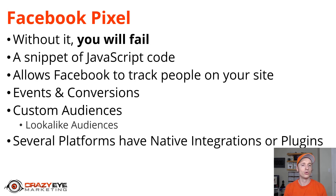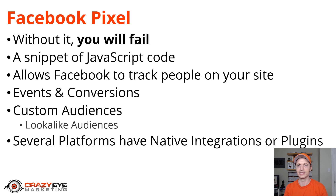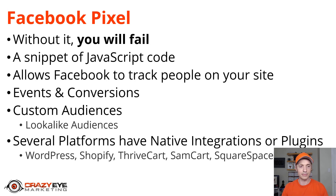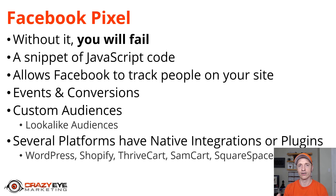Several platforms have native integrations or plugins with the Facebook Pixel. In this video I'm going to show you how to install it without a native integration, but if you have one of these platforms, do a quick Google search to see if you can natively install your Pixel, because that's likely a better option — it will automatically track events for you. For example, platforms like WordPress, Shopify, ThriveCart, SamCart, or Squarespace will automatically track opt-ins, purchases, add-to-carts, wish lists, and more. If your platform supports the Facebook Pixel, use that integration rather than just installing it in the header.